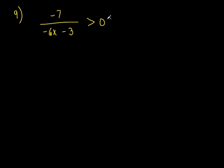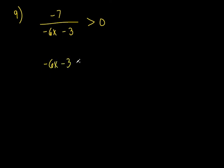You already have a 0 on the right-hand side, so that saves some steps. What are we going to do? Set everything equal to 0. Set the numerator equal to 0. But can you set negative 7 equal to 0? No, because negative 7 equals negative 7 — it can't equal 0. So I don't even worry about the numerator. The only variable is in the denominator, so let's take the denominator and set that equal to 0.